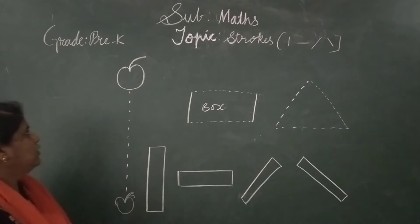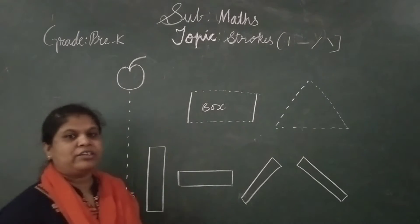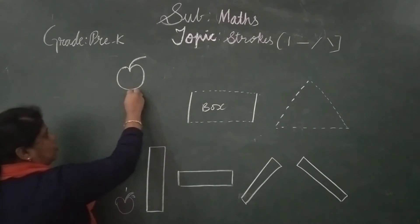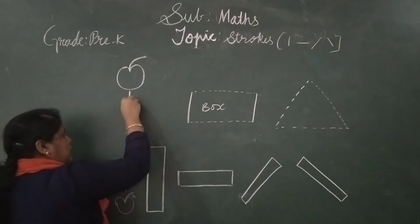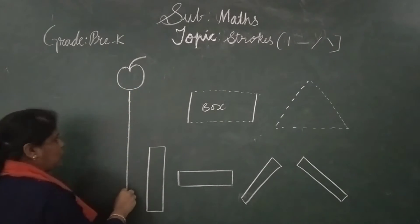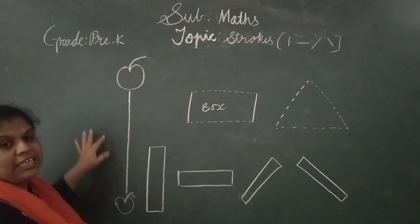See here, as I have taught you in English the standing line, here in order to write 1 you need a standing line. So, join these dots so that you will get a standing line. What is this? Standing line.